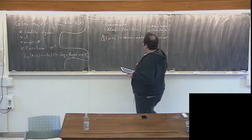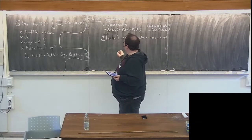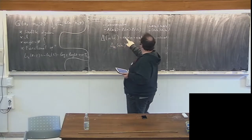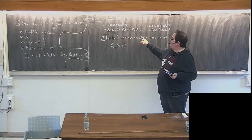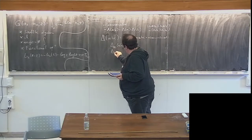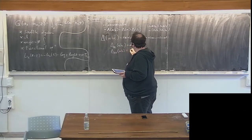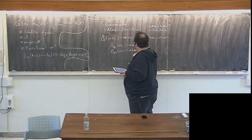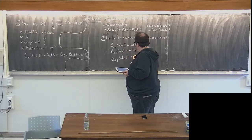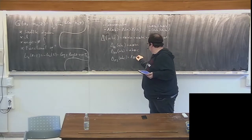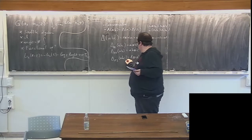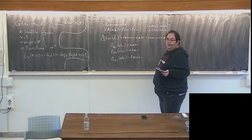Some notation: it will be useful later on to call, for example, delta index 1,2 — this will be a piece in the sum that has one here and two and what follows. Similarly, delta 2,1 of ABC would be AB tensor C. Delta 0,3 of ABC would be zero — which is a word of length zero — tensor the word of length three. It's just notation useful to be able to pick out pieces in this sum.